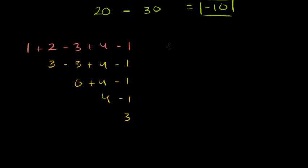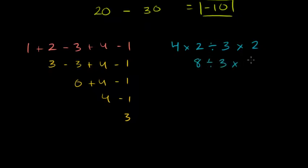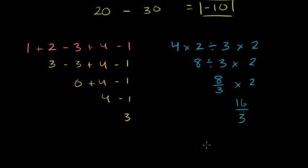The same thing is true if you have multiplication and division all on the same level. So if you have 4 times 2 divided by 3 times 2, you do 4 times 2 is 8, then 8 divided by 3 is 8 thirds, then 8 thirds times 2 is 16 over 3. That's how you interpret it — you don't do the last multiplication first and rearrange things.